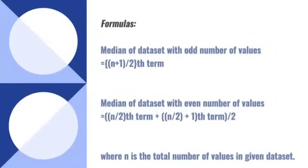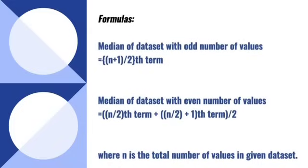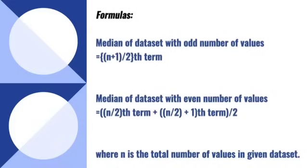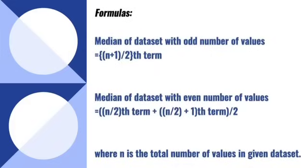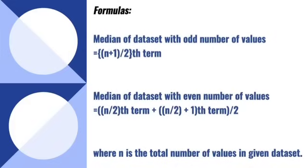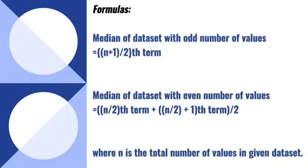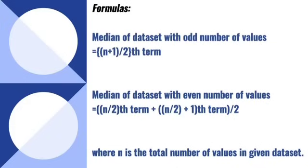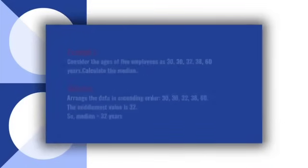Formulas. Median of data set with odd number of values equals n plus 1 slash 2 th term. Median of data set with even number of values equals n slash 2 th term plus n slash 2 plus 1 th term slash 2. Where n is the total number of values in given data set.